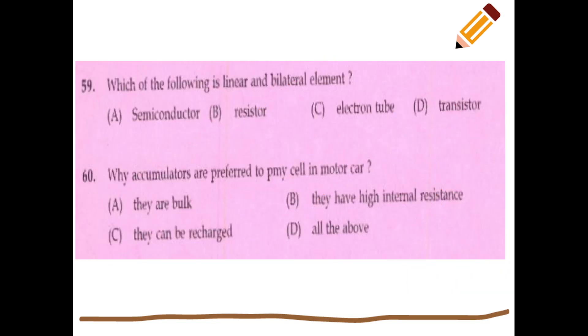Question 99: which of the following is a linear and bilateral element? The answer is a resistor — it is a linear and bilateral element.